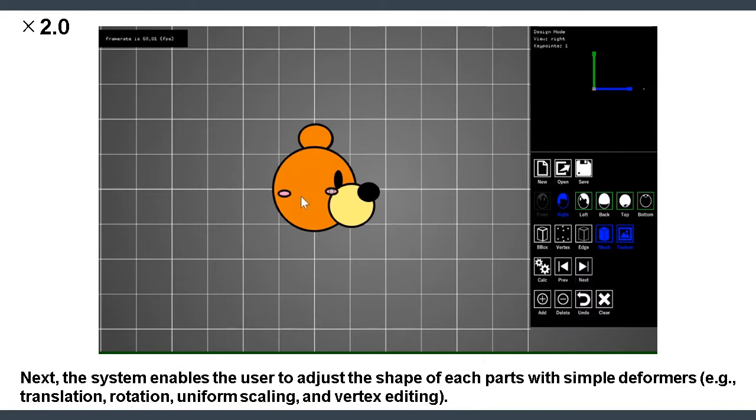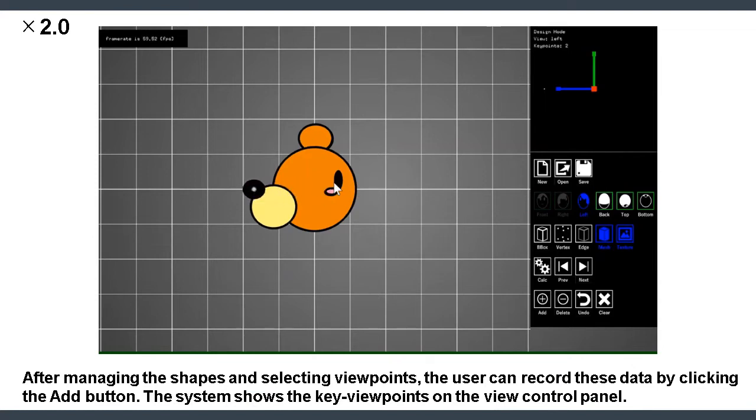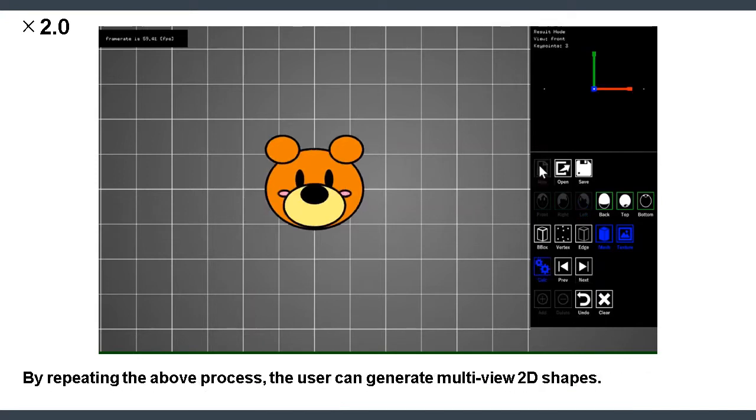Next, the system enables the user to adjust the shape of each part with simple deformers. After managing the shapes and selecting viewpoints, the user can record these data by clicking the Add button. By repeating the above process, the user can generate multi-view 2D shapes.